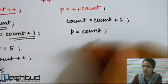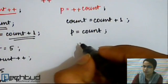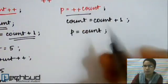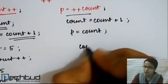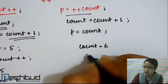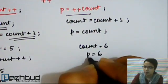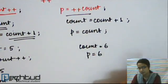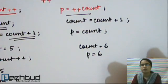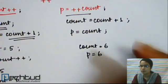So here, if COUNT was initially 5, after execution of this statement, we will have COUNT equal to 6 and also P equal to 6, because only after the increment part, the value will be assigned to the other variable.